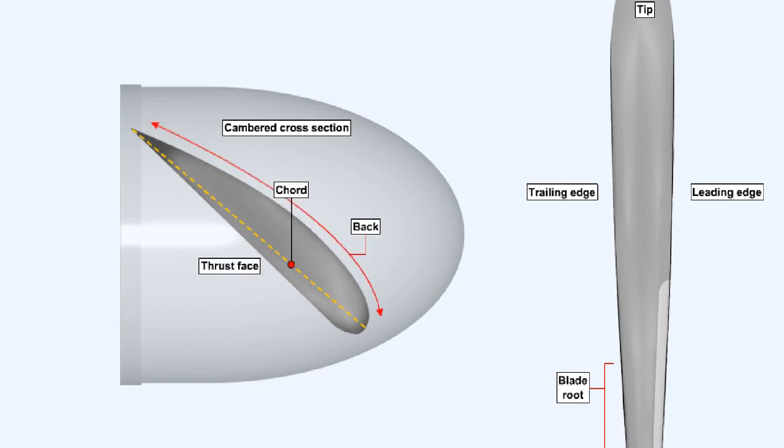The cambered side of the blade is called the back, while the under cambered side is termed the thrust face. Where the section of the blade becomes round at the root area is termed the blade shank, while the base of the blade is called the blade butt.